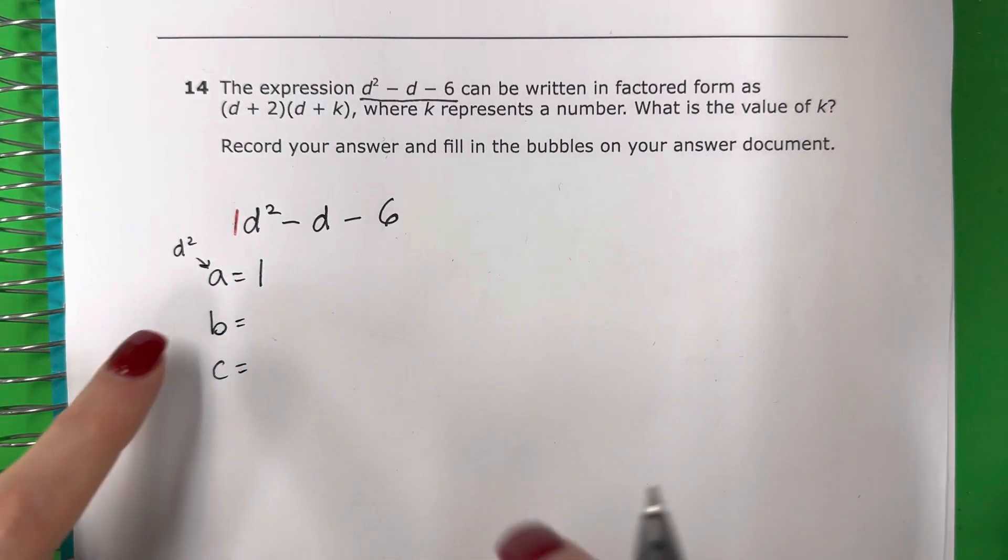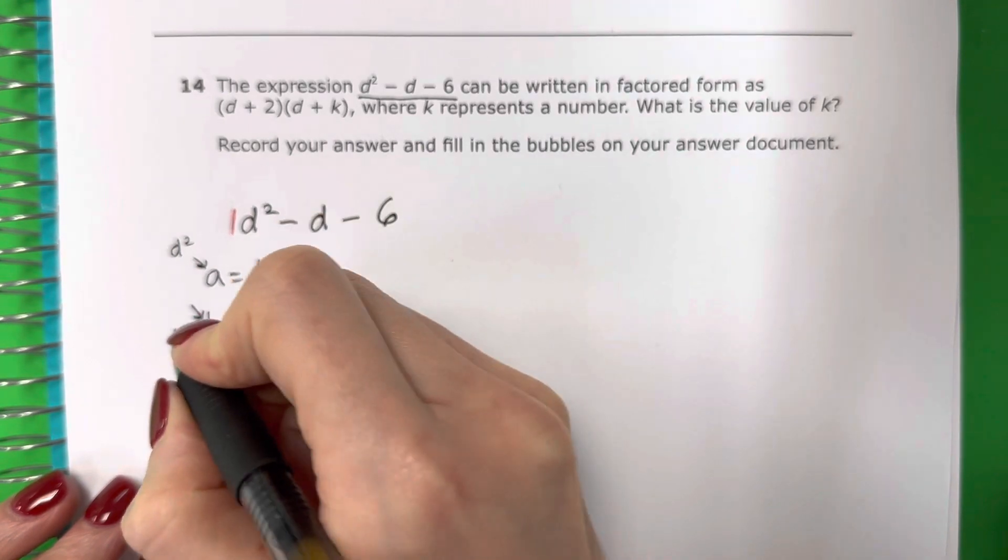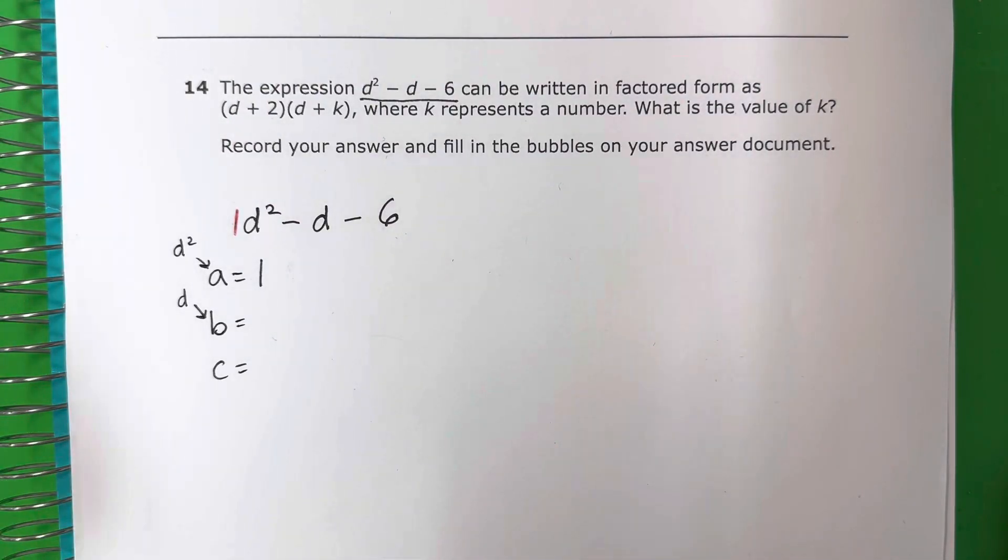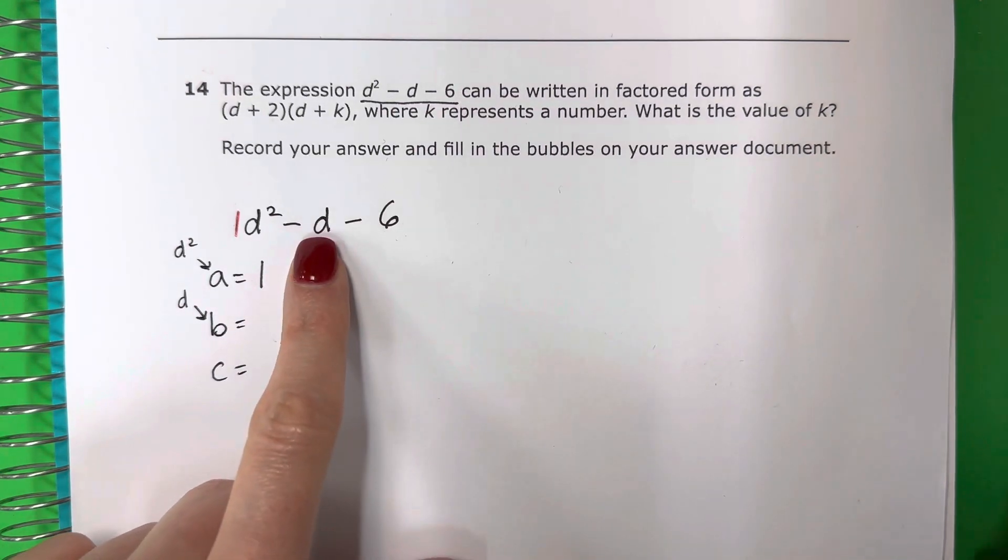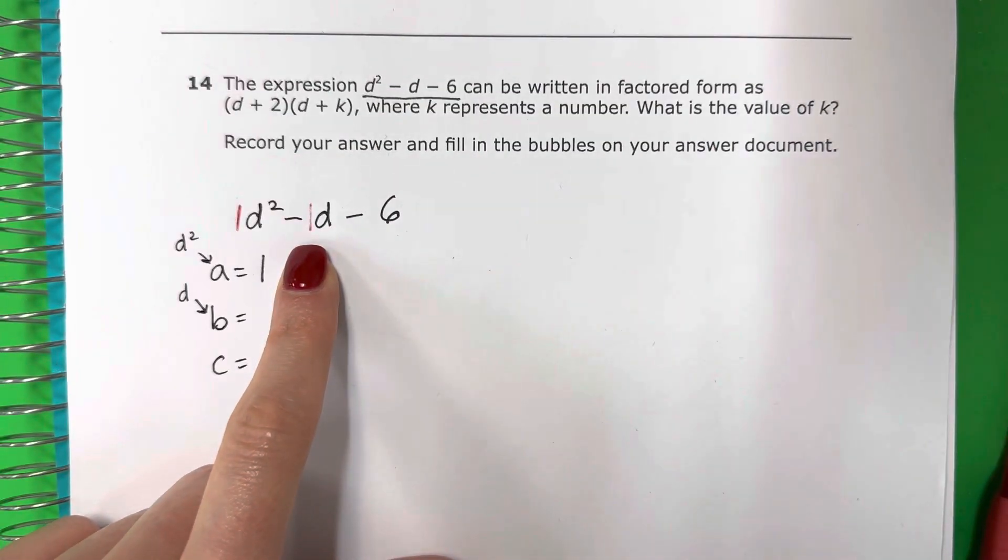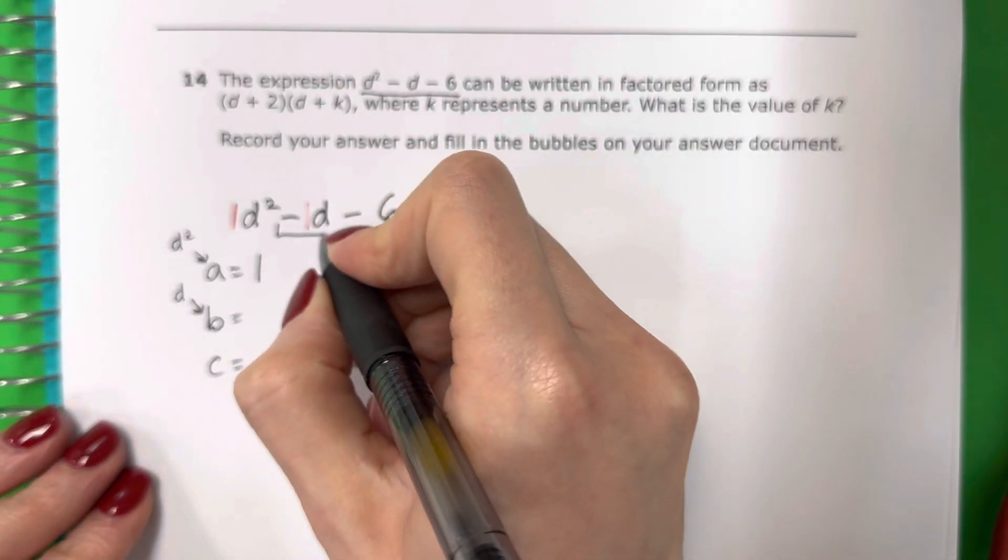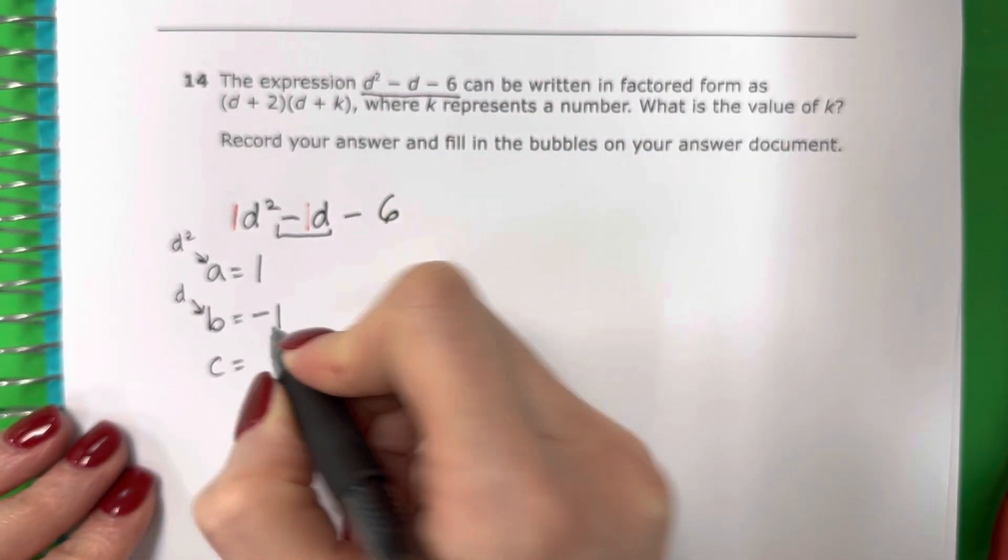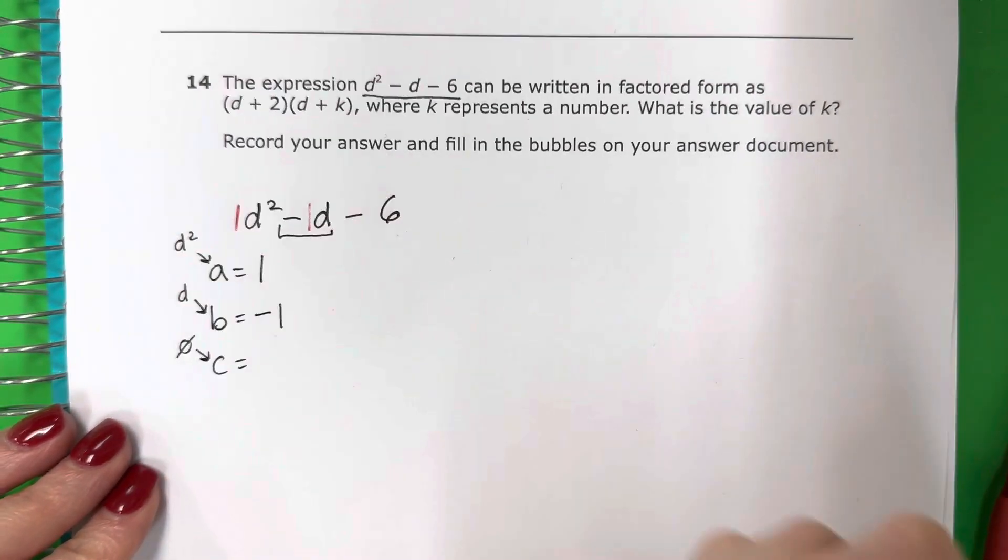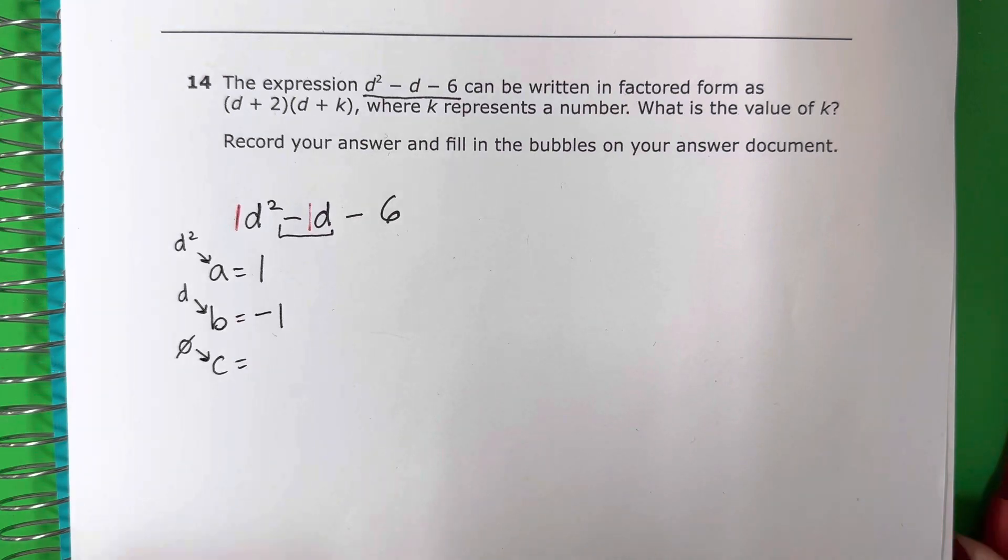Okay, b is the number with the letter no exponent. B es el número con la letra sin exponente. So that would be right over here. So remember, recuerda, if there's no number, si no hay número, it's 1. Es 1. And this is negative 1. Es negativo 1. So negative 1. C is the number with no letter. C es el número sin letra. So that would be negative 6, negativo 6.